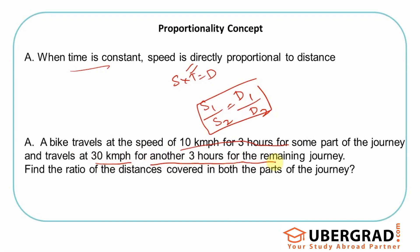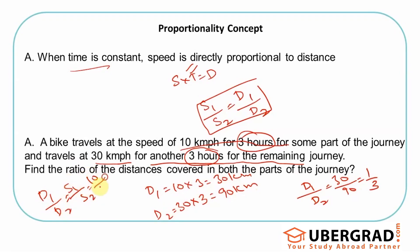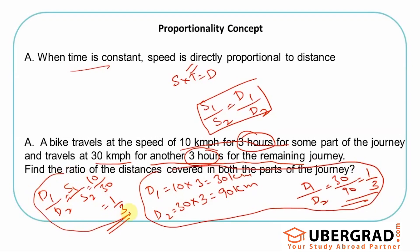The time is the same in both parts — three hours each. The ratio of distances: distance one is 10 × 3 = 30 kilometers; distance two is 30 × 3 = 90 kilometers. So d1 by d2 is 30 by 90, which is 1 by 3. Using the proportionality concept directly, the ratio of distances equals the ratio of speeds — that is 10 by 30, which is 1 by 3. The same result, skipping all intermediate steps.